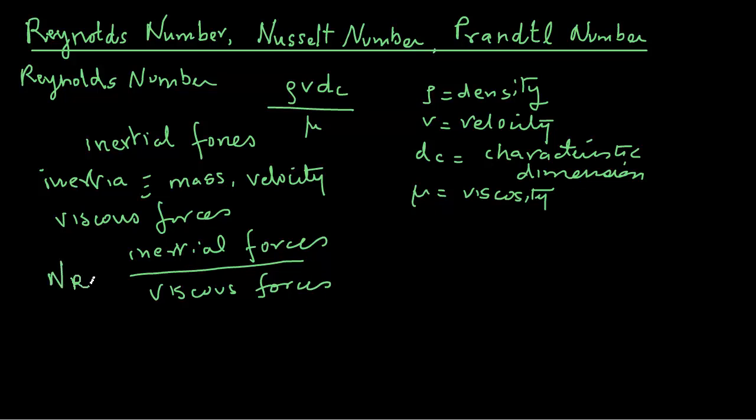Let's substitute units for each of these quantities to see whether they actually cancel out or not. The units of rho are kilogram per cubic meters, v is meter per second, dc is meter, and viscosity is kilogram per meter second. When we write these units, we can actually cancel out meters with meters, kilograms with kilogram, and seconds with second. There are no units left. In other words, Reynolds number is a dimensionless number.